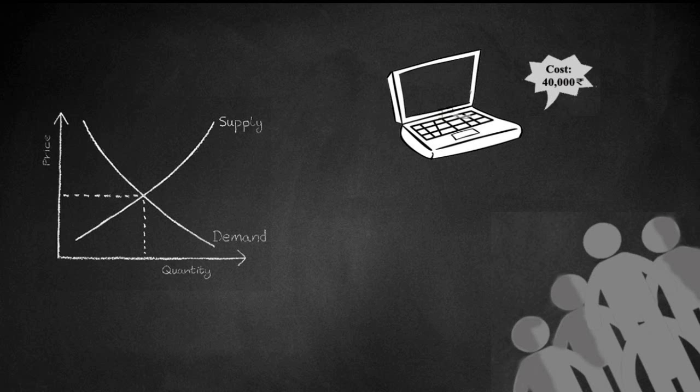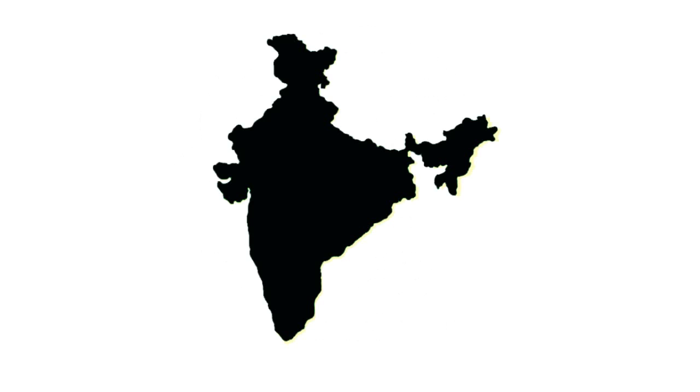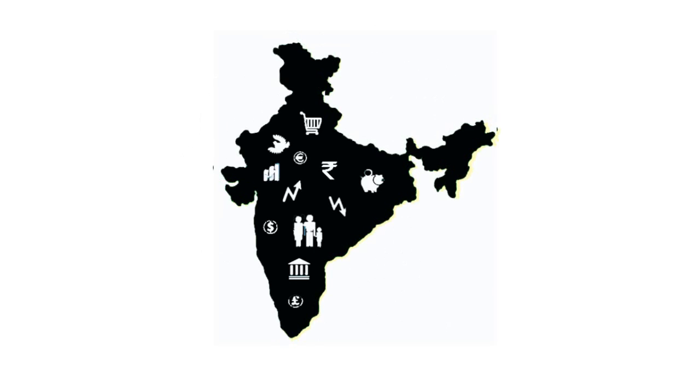So this is what microeconomics deals with. Now let's come to macroeconomics. Where microeconomics deals with the behavior of the individual parts of the economy, macroeconomics deals with the whole economy. That is, we are interested in the economy as a whole.